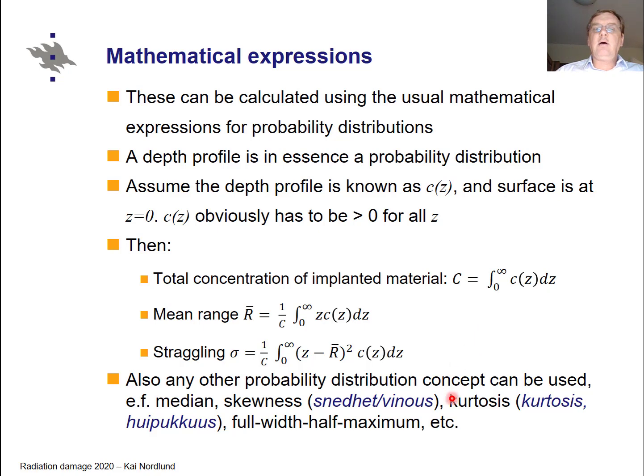Note here that this is really in units of concentration, so this is not a probability distribution - this has physical units of particle concentration. In addition to the quantities already mentioned, one can define other quantities or in principle any other quantity which relates to a probability distribution. So you can find the median, the skewness, the kurtosis, full width at the half maximum and so on. The full width at the half maximum is of course closely related to the straggling.